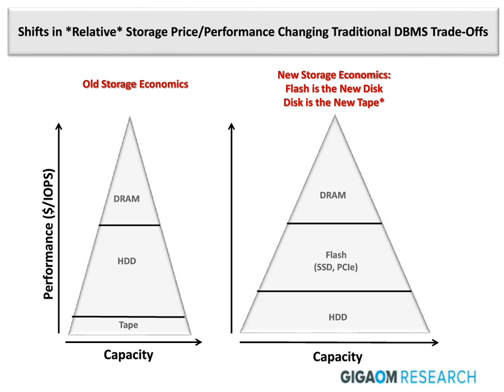So why did databases rely on hard disks for so long? Mainstream databases used hard disks because of the underlying storage economics. Most database architectures still reflect storage price-performance assumptions that are 10 to 30 years old. The design for most relational databases descended directly from original research done in the 1970s. In this world, memory was scarce enough to be used only as a cache, and everything else was organized to squeeze performance out of the hard disks.